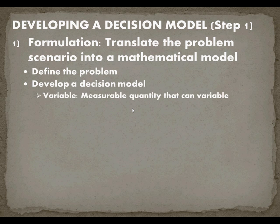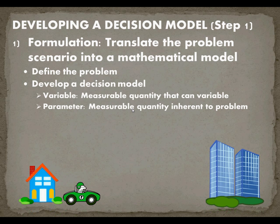There are two elements to most decision models. The first are variables, which are measurable quantities that can vary so we can control them. The second are parameters, which are measurable quantities inherent to the problem. In our scenario, we defined the problem as needing to get to work on time, and the decision model is time equals distance divided by rate.